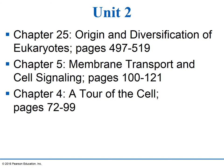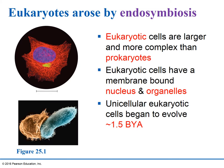Let's start our conversation with the origins of eukaryotic cells. We know there are basically two types of cells: prokaryotic cells and eukaryotic cells. We spent quite a bit of time talking about prokaryotic cells in the last unit. Eukaryotic cells are much larger, about 10 times larger than prokaryotic cells. The defining characteristic that separates prokaryotes and eukaryotes is the presence or absence of a nucleus — prokaryotes don't have a nucleus, eukaryotes do. Eukaryotes also have a myriad of specialized organelles performing specific functions for the cell.